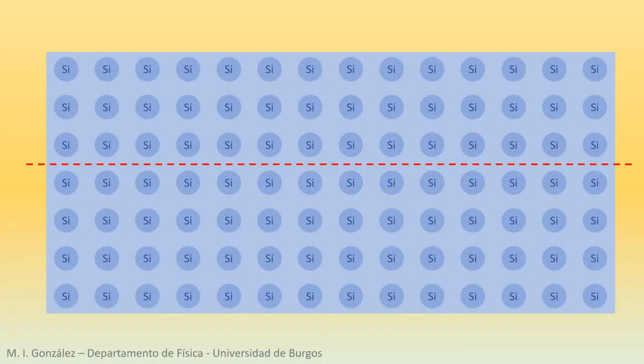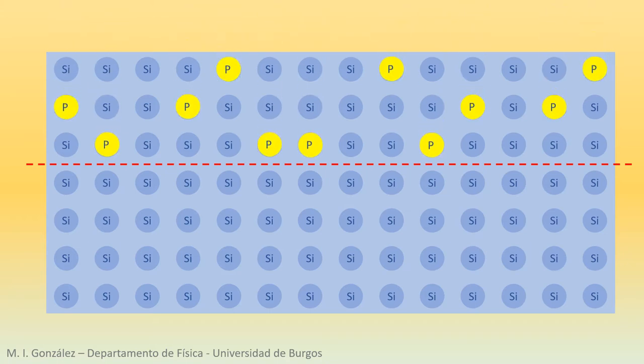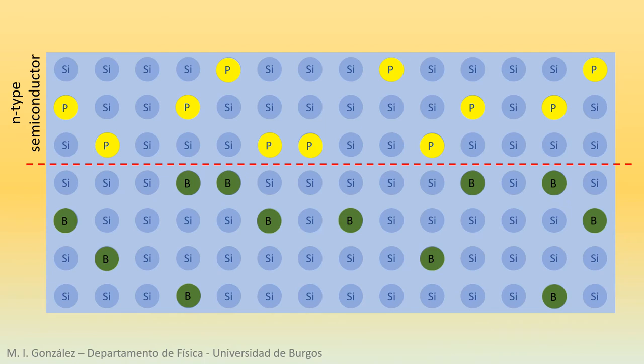The upper layer of the wafer is doped with small amounts of a pentavalent material such as phosphorus. In this way, this layer becomes a so-called N-type semiconductor. The lower portion is doped with a trivalent material, perhaps aluminum or boron. The result is a P-type semiconductor.